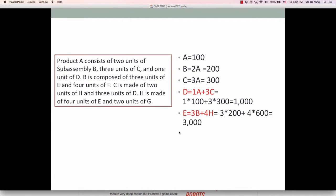And let's go to E. E also requires, B is composed of 3 units of E, which is 3B, plus H is made of 4 units of E, so 4H. But since we do not know H, we have to calculate H. But we know B, so 3 times 200, but we don't know H yet. So if we calculate H first, H is made of 4 units of E and 2 units of G. I'm sorry. You have to look at this. C is made of 2 units of H. So H is 2C. Since we know C, which is 300, H is 600.